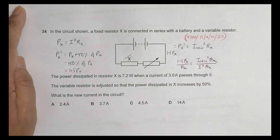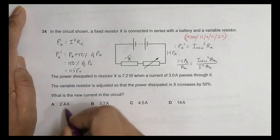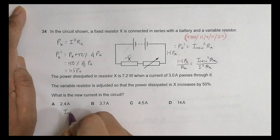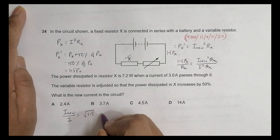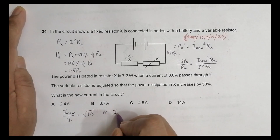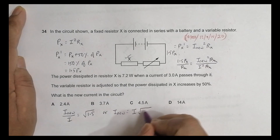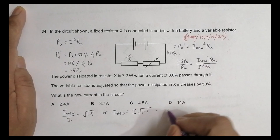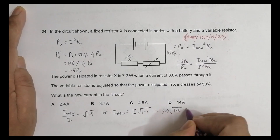R_X and P_X cancel out, so what remains is I_new over I equals the square root of 1.5. This gives us I_new equals I times root 1.5, and the current I is 3.0 amperes, so I_new equals 3.0 times root 1.5.